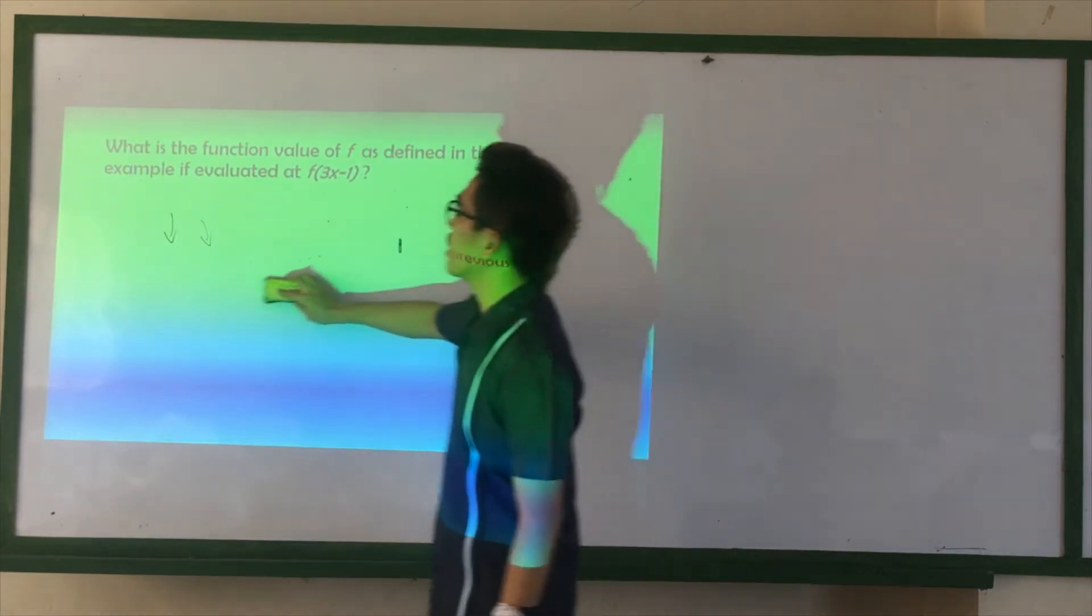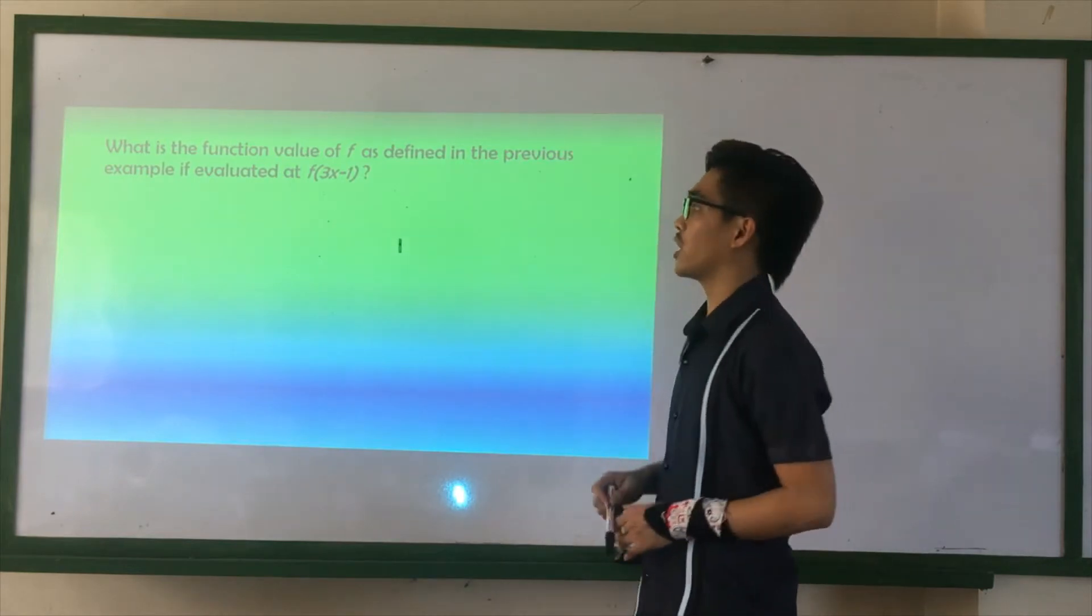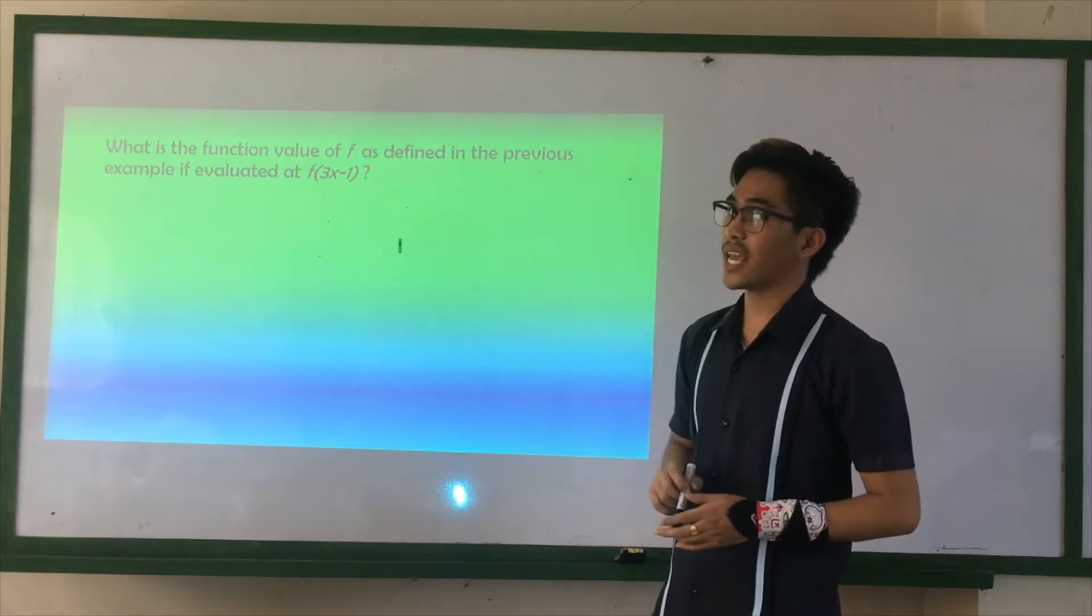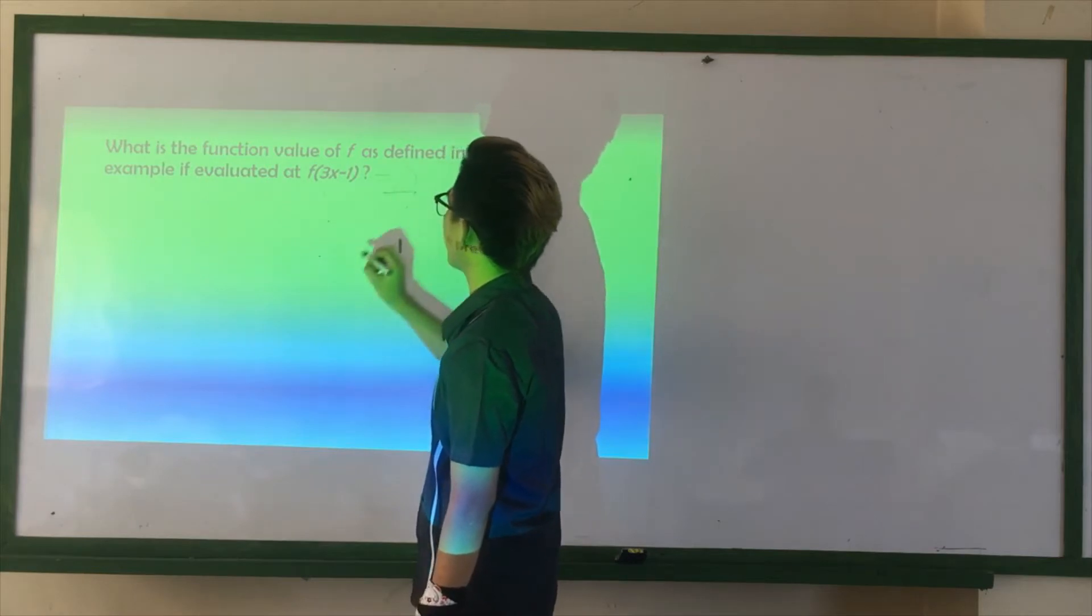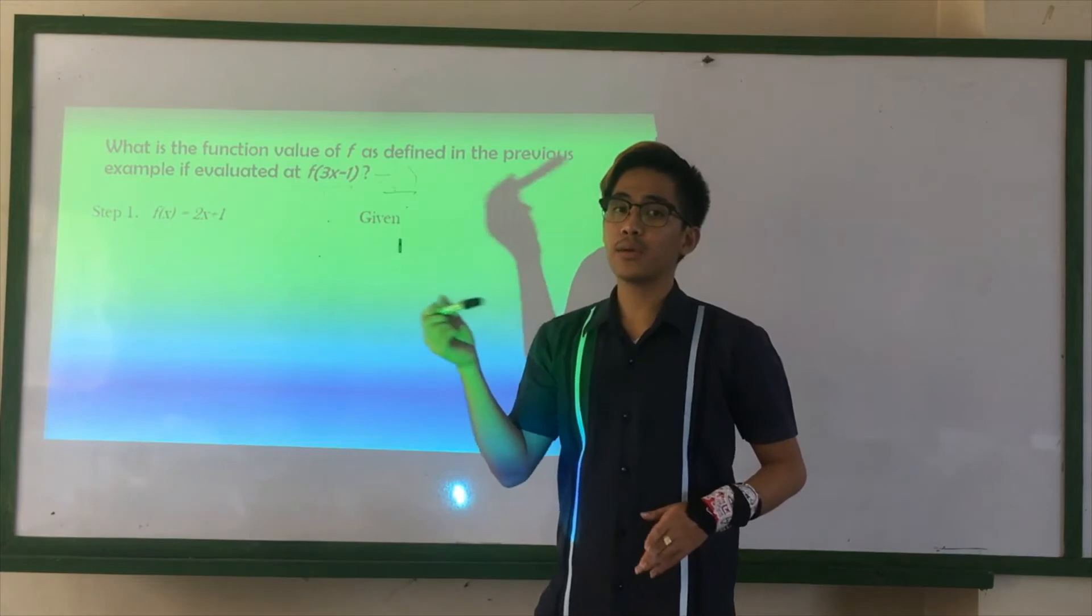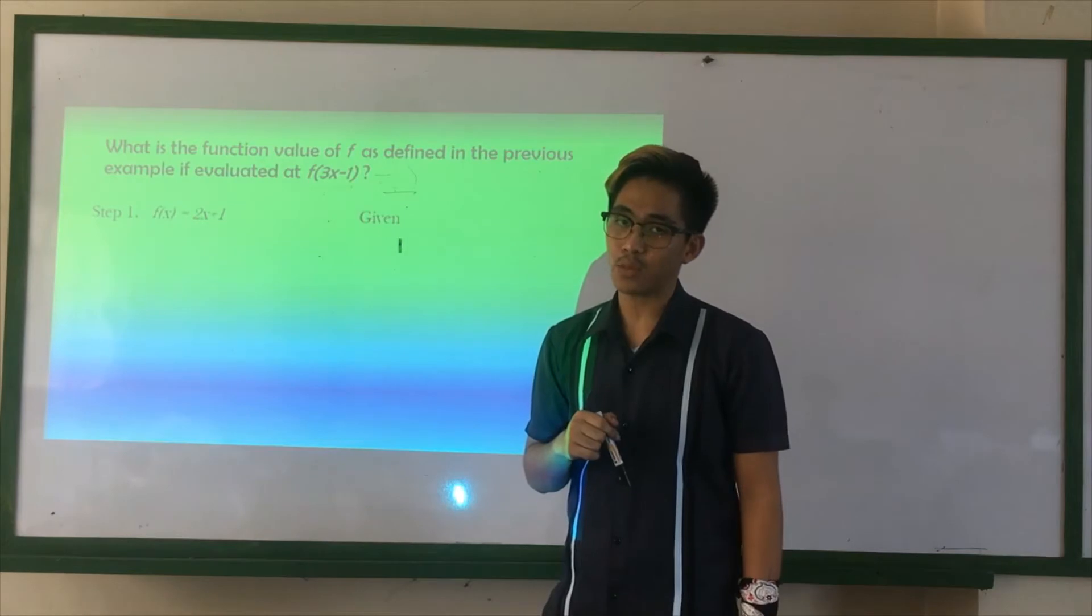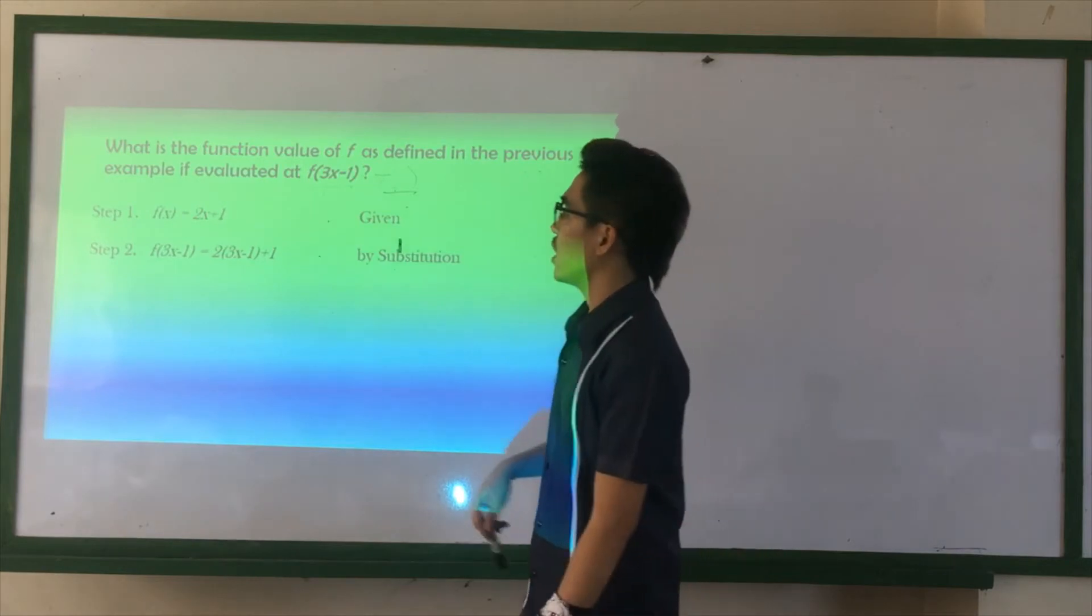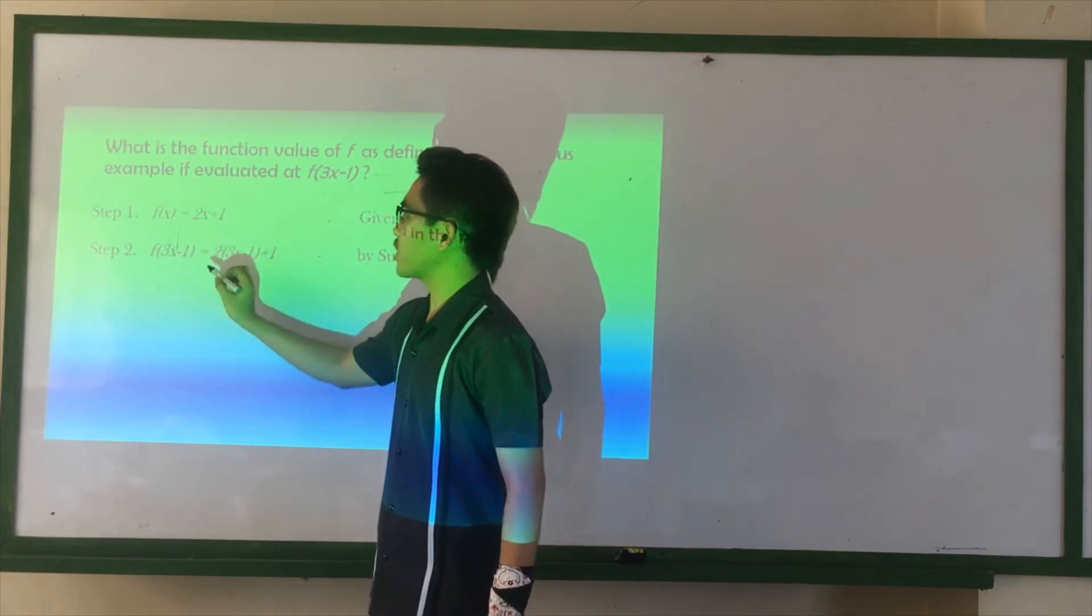Next example. What is the function value of F as defined in the previous example if evaluated at F of 3X minus 1? So, we have F of X. The value of X is 3X minus 1. The step one is we write the given function, which is F of X equals 2X plus 1. The next one is we replace the value of the variable, which is from X, it will become 3X minus 1.